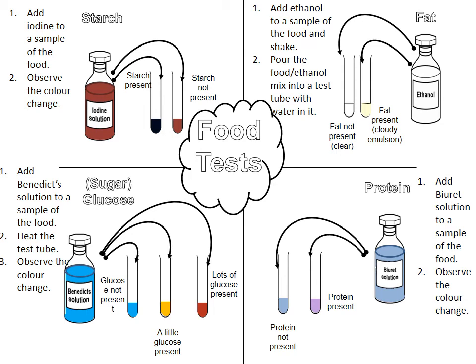When testing for protein, you add a solution called biuret to a sample of the food. This is also a pale blue colour, and you observe the colour change. If protein is present, it's going to turn to a lilac-y purple. If protein isn't present, it will stay that pale blue colour.